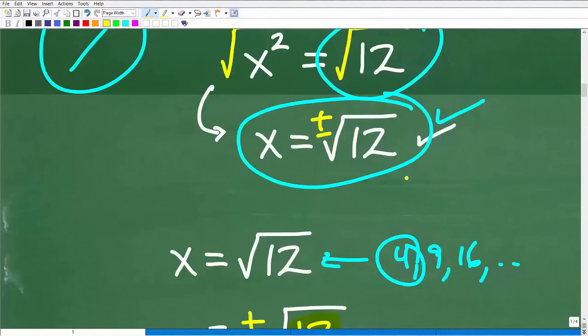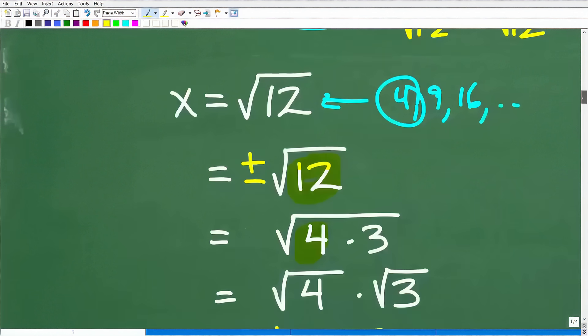Because here, really, one solution is positive square root of 12 and the other is negative square root of 12. We just need to simplify this. Anytime you're dealing with a quadratic equation and you're taking the square root of both sides, make sure you use that positive and negative because there are two solutions there. That's why I'm putting this in right here.